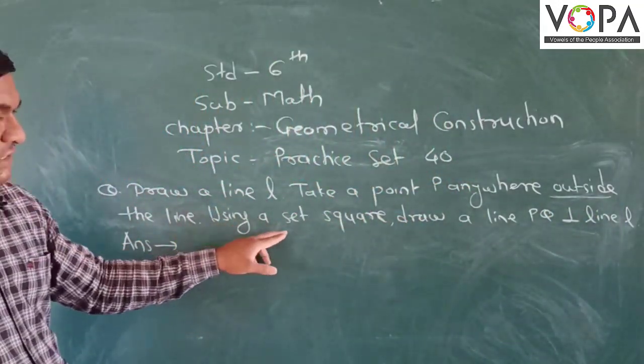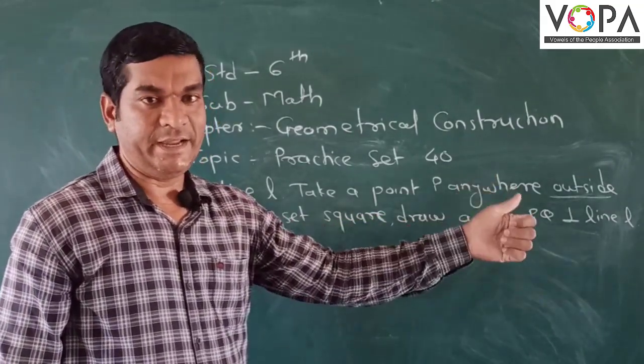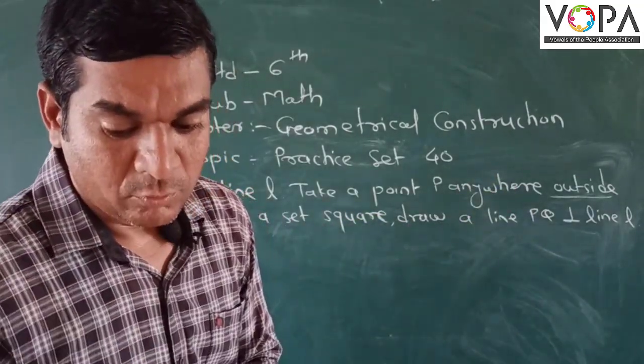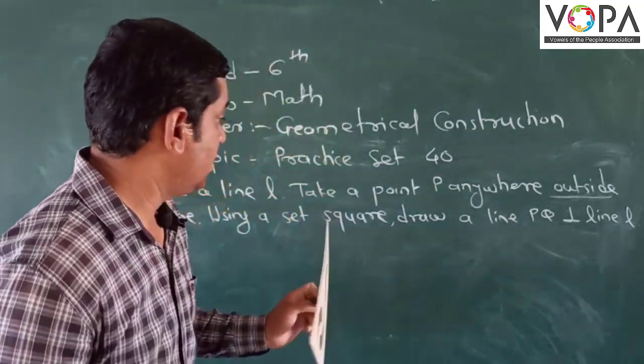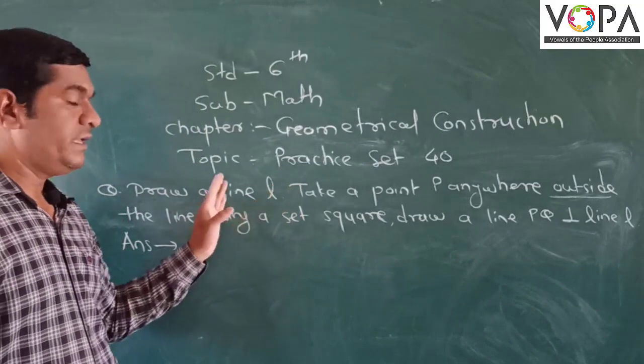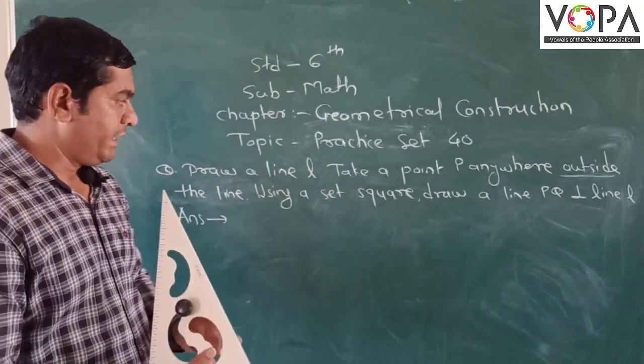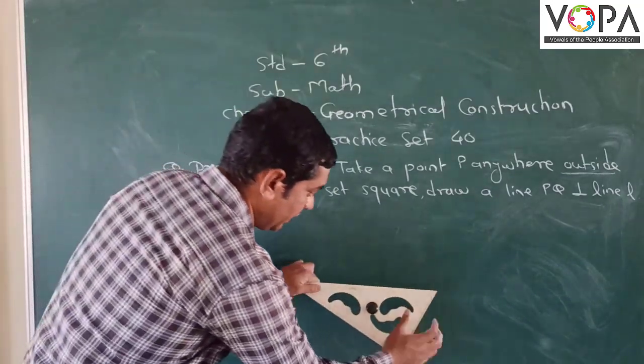Using the set square, draw a line PQ perpendicular to the line N. First of all, we want to draw a line N at any measurement because the measurement is not given. So by any measurement, we draw the line. Let us draw line N.